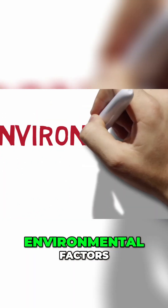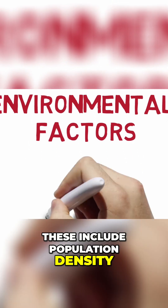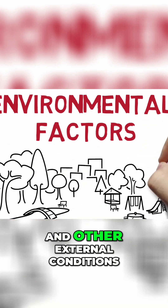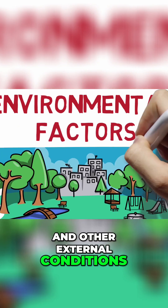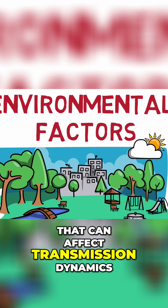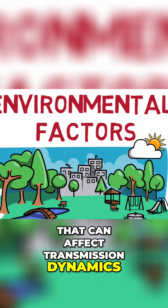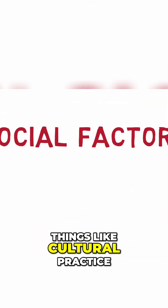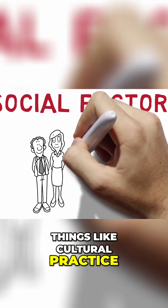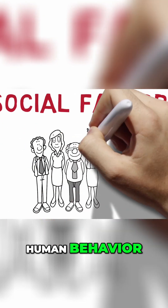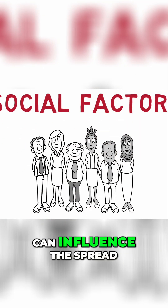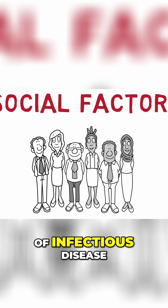Environmental factors include population density, climate, sanitation, and other external conditions that can affect transmission dynamics. Social factors include things like cultural practice, human behavior, and policy interventions that can influence the spread of infectious disease.